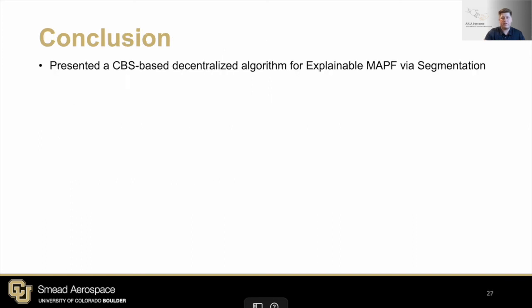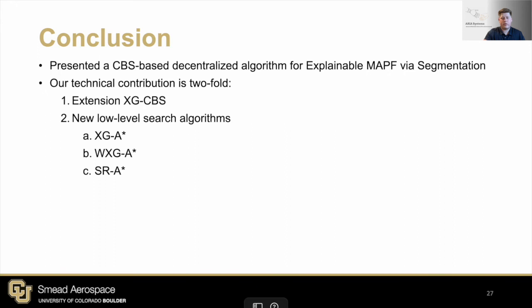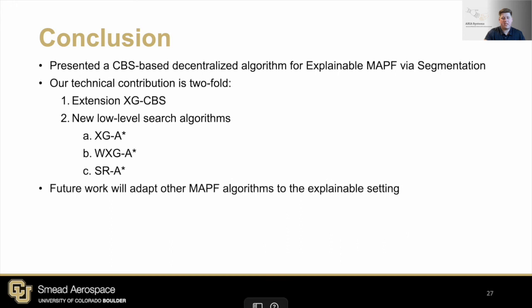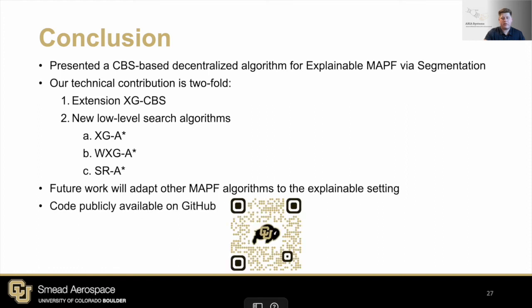In conclusion, this work presented a CBS-based algorithm for solving our explainable MAPF problem. In addition, we offer the user three choices of low-level graph search to fit their respective needs. Future work in this domain could include adapting other MAPF solvers to our explainable setting. Finally, if you have any interest in using our work, the code is available on GitHub using the following QR code. Thank you all for coming, and I look forward to answering any questions you might have.